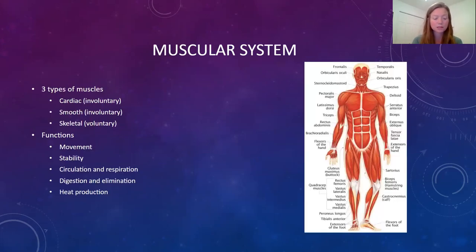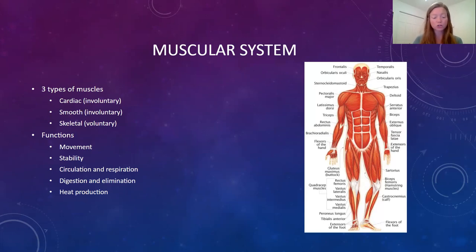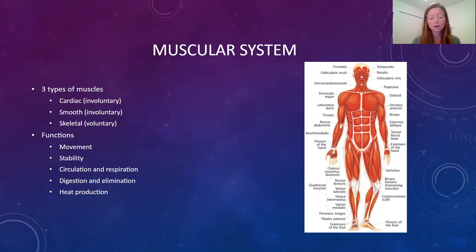Our muscular system has many functions: it helps our body produce movement, produce heat, and support our posture. Muscles basically contract and relax — either automatically or voluntarily — and this is controlled by the nervous system.